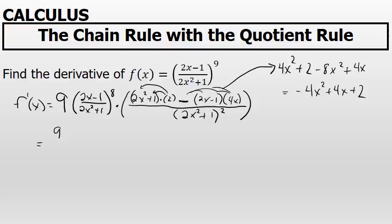Now, at this point, I want to realize that the 9 that's in the front of this derivative is the same thing as 9 over 1. The quantity to the 8th power, where the quantity is a fraction, is the same thing as 2x minus 1 to the 8th over 2x squared plus 1 to the 8th. The numerator of the derivative, I simplified to negative 4x squared plus 4x plus 2, and the denominator of the derivative is 2x squared plus 1 to the 2nd power.